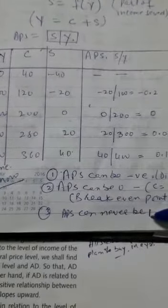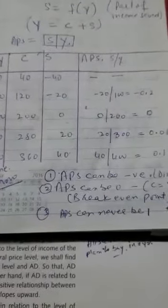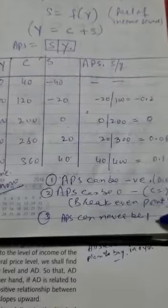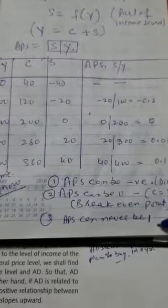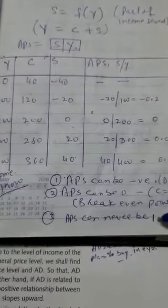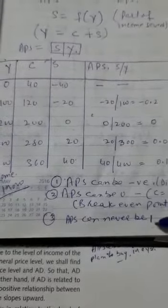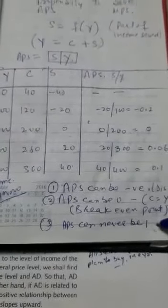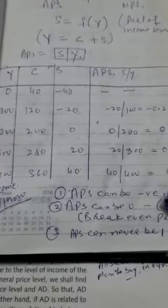And third and the last conclusion you can derive, that APS can never be 0. Average propensity to save can never be 0. Can never be 1. Sorry. Okay? So, these are the conclusions.